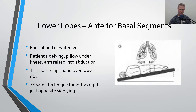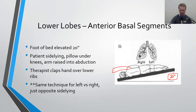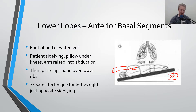Now for the lower lobes, the feet of the bed are elevated 20 inches — a bit more Trendelenburg than before. The patient is side lying, and a lot of times you'll see the image with the arm abducted over their head in full abduction so you can get to the ribs. The therapist claps over the lower rib cage area. This is the same left versus right for the anterior basal segments — 20 inches up, arm abducted, clap over the lower rib area.